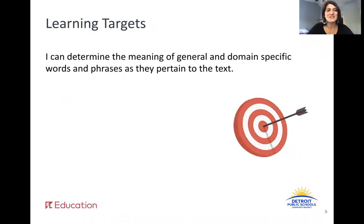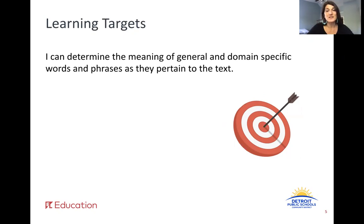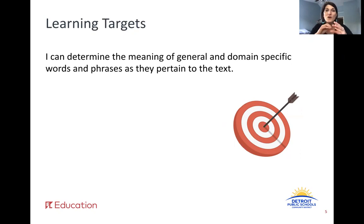So our learning target today: I can determine the meaning of general and domain-specific words and phrases as they pertain to the text. We've done some work with this almost every week. What you're doing is really finding the meaning of some general words that we all use, and then words that are really specific to this article and to natural disasters, and how they pertain in the text. You're going to use clues in the text to help you figure out the meaning, and you're going to use a dictionary and your strategies with vocabulary.